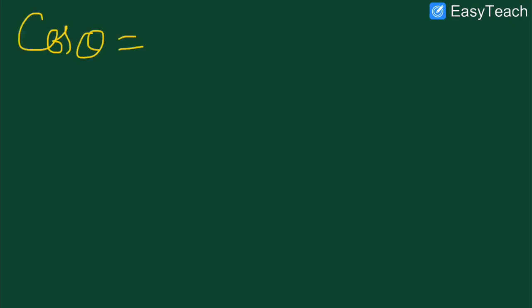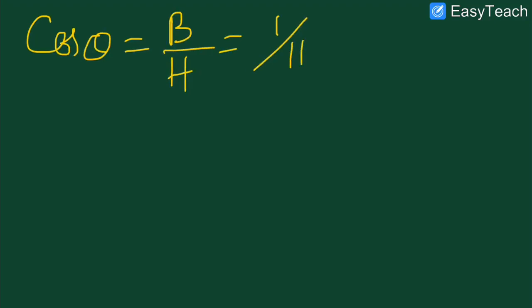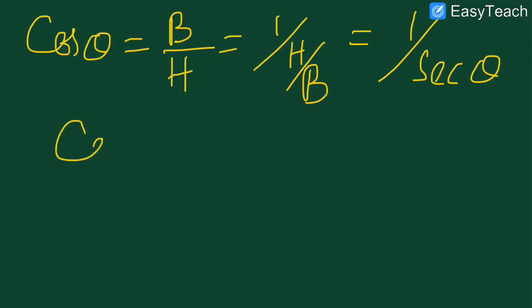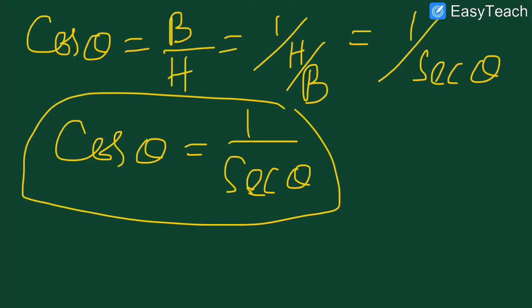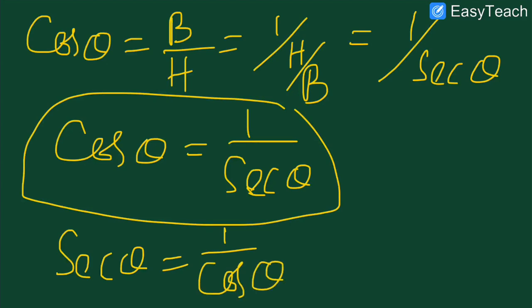Ab ek aur relation: cos theta is base divided by hypotenuse. We can write this as 1 by H/B, and H/B is sec theta. So cos theta = 1/sec theta. From this we can also derive sec theta = 1/cos theta. Yeh hai reciprocal relation between cos and sec.